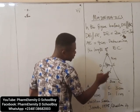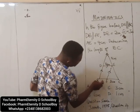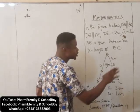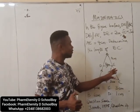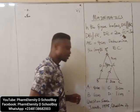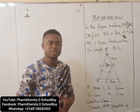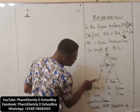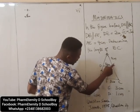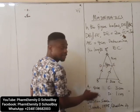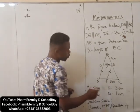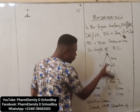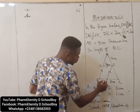Having determined BF, we can proceed. In a parallelogram, the two opposite sides are parallel and equal. So DB and FE are parallel, opposite, and equal. Likewise, DE and BF are also equal. So if DE is 2cm, that means BF is also 2cm.